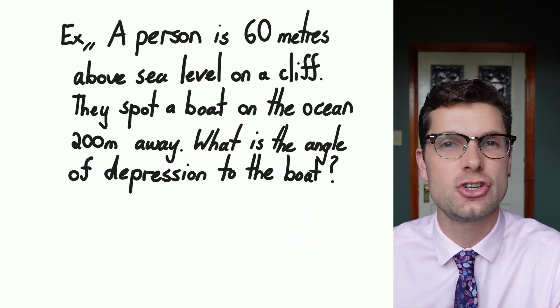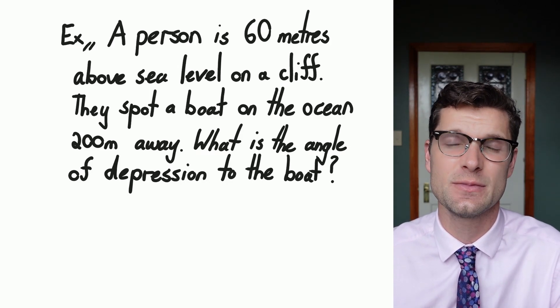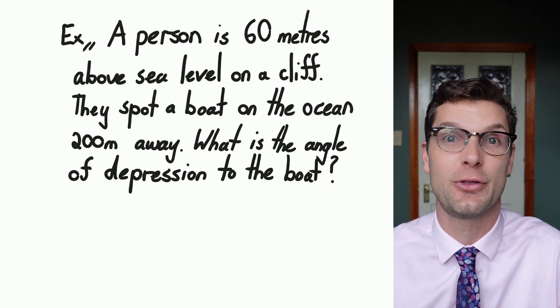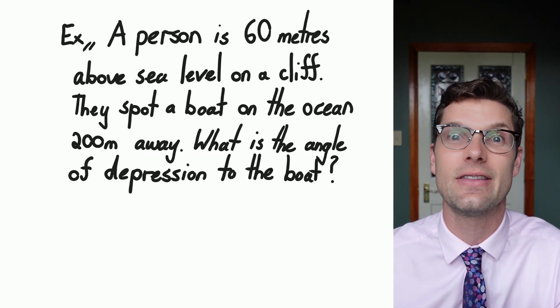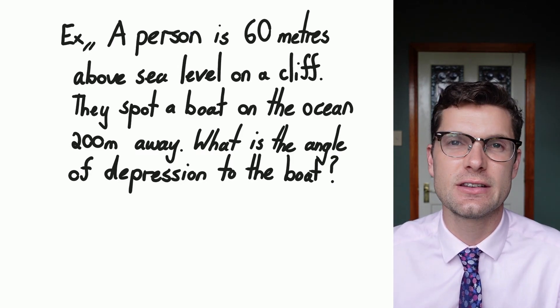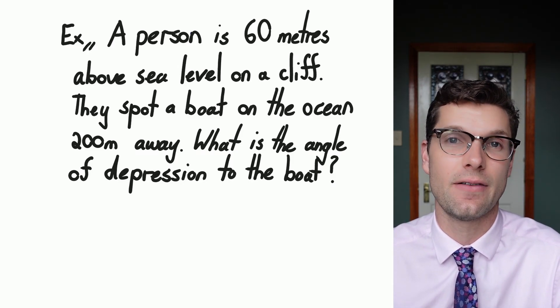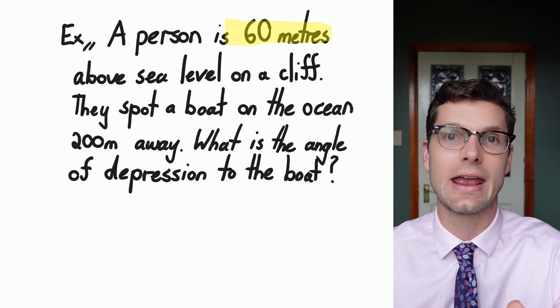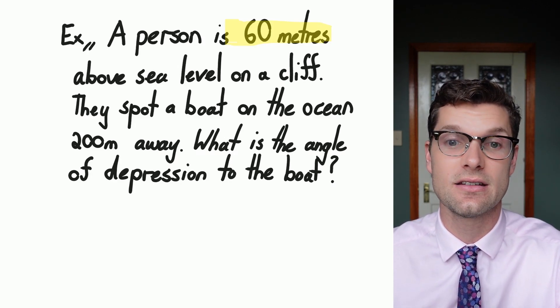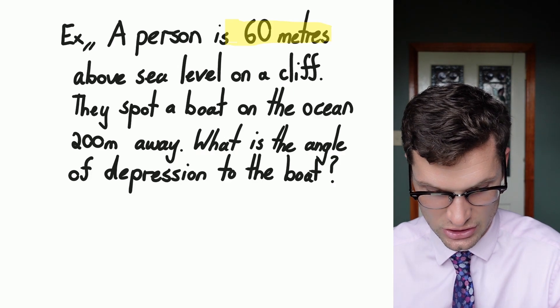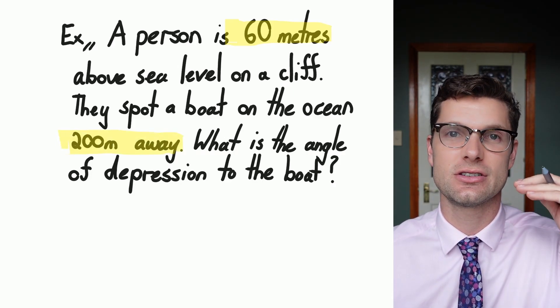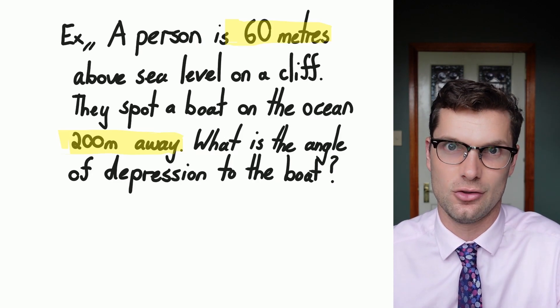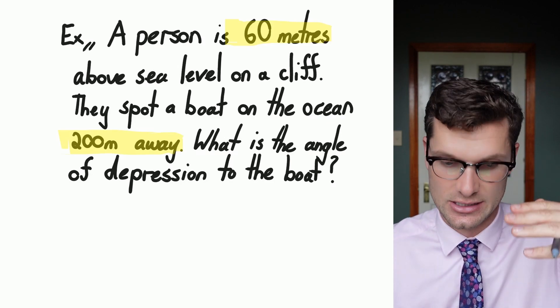So we're going to have a look at this question and we're going to interpret it first. I'm just going to highlight some of the key terms, but the most important thing for this is try to imagine the situation. The first thing we've got is that a person is elevated 60 metres on a cliff, above sea level, and they're looking out onto the horizon and they see a boat far out to sea, which is 200 metres away. So if you imagine yourself standing on a cliff, we know that we've got an angle of depression because we have to look down in order to see it.